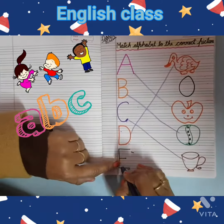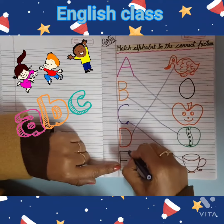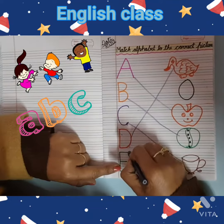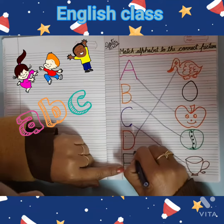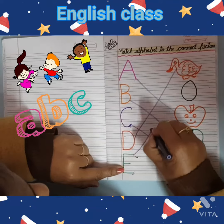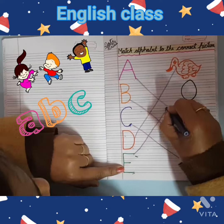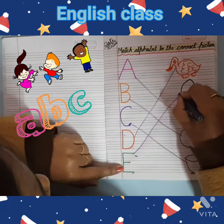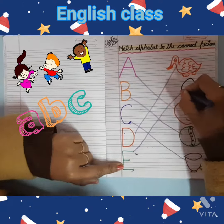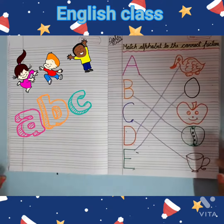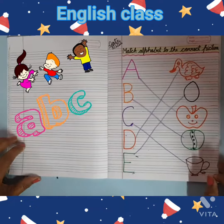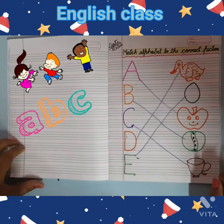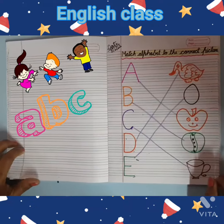Next? E. So, aapko E alphabet ko, E for egg. Where is egg? Yes. Kids, now you have to do this work in your English notebook. Okay.